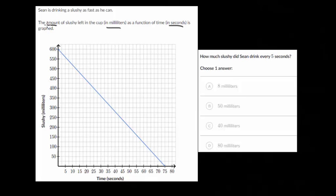We've got the amount of slushy left in the cup. That's going to be this vertical axis here. And then our horizontal axis is time.